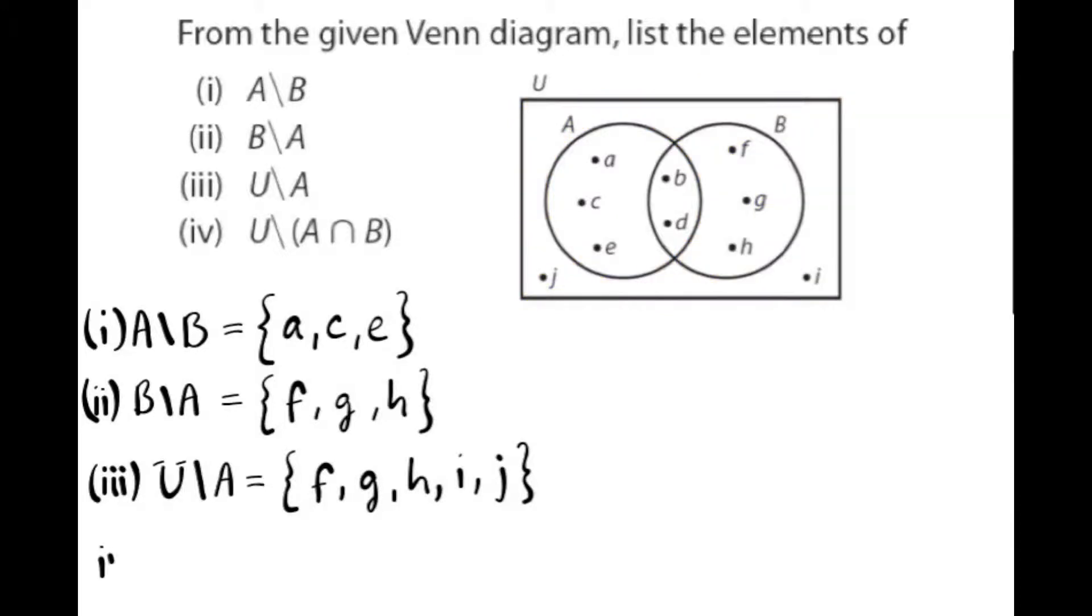The last question, the universe not A intersection B. So this means everything except the intersection. So I shade everything except the intersection. Again, the order doesn't matter as long as we list each of these elements. So it includes a, c, e, f, g, h, i, and j.